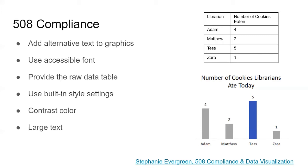You may have heard of 508 compliance, which is just one of many rules around web accessibility. Some key ways to make a visualization accessible and be in compliance is to add alternative text to graphics, which explains what is being displayed in the graphic, use accessible and easy to read fonts, provide the raw data for reference in a table, use built-in style settings such as heading levels, and make sure that there is high enough contrast in colors so that colors and text on the visualization are readable.